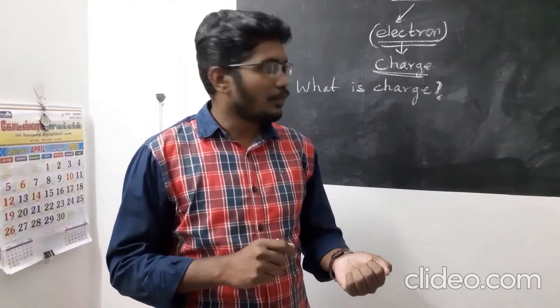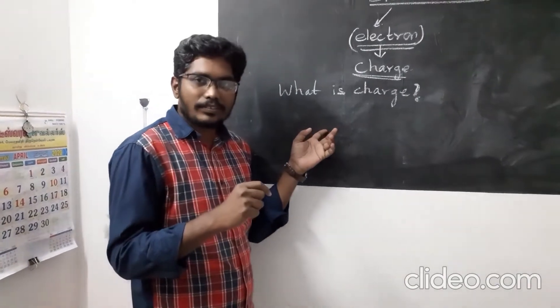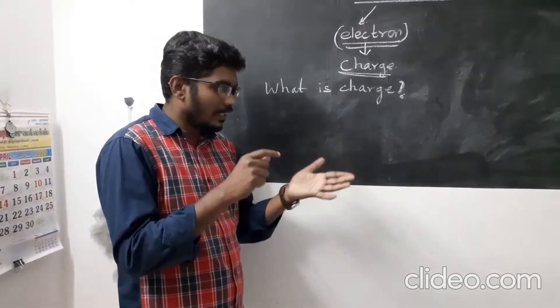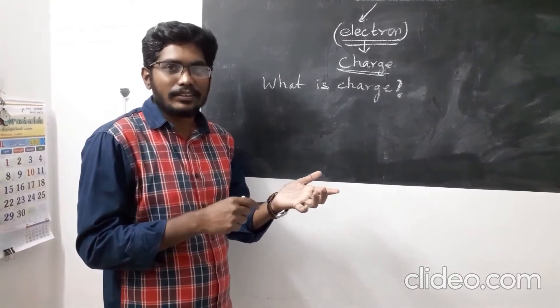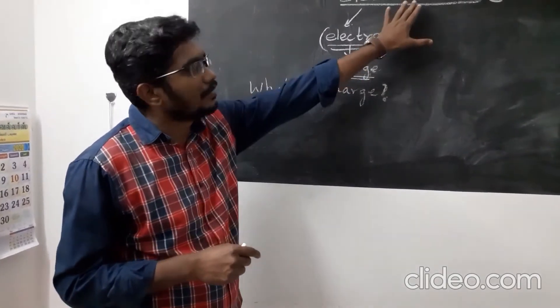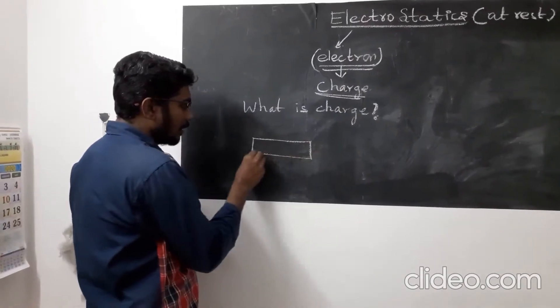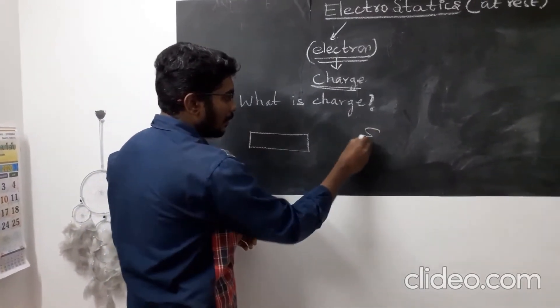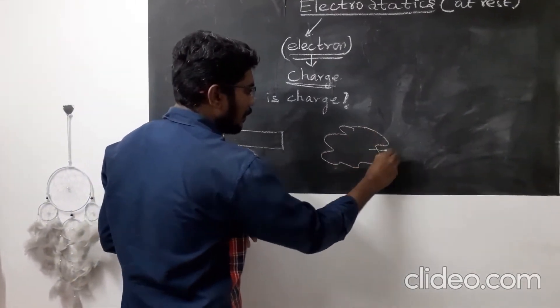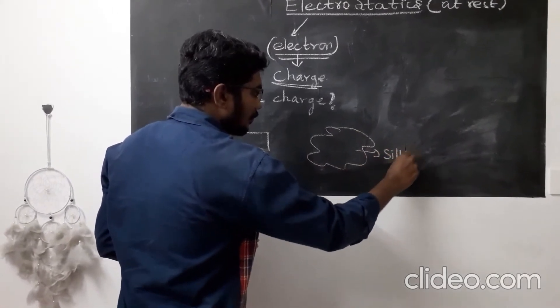So you may wonder how this happens. When a glass scale is taken near the bit of paper, the bit of paper gets attracted. This is because of the phenomenon of statics. Now, let us imagine this scale and this silk cloth - a similar example.